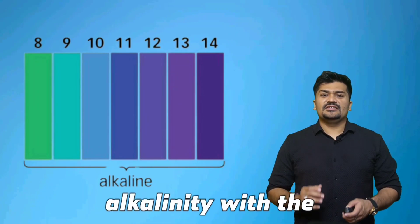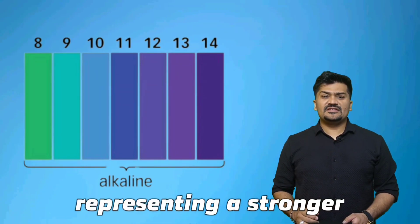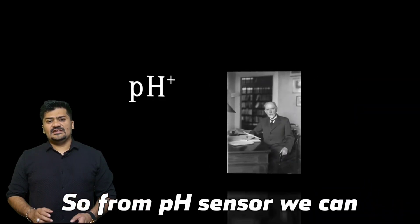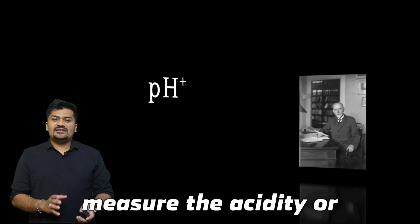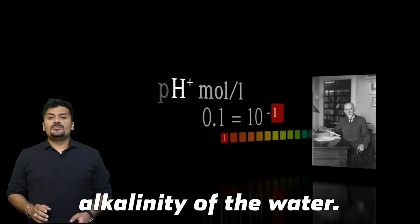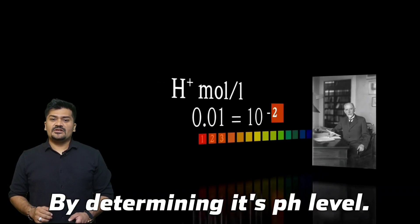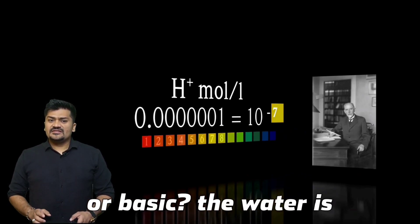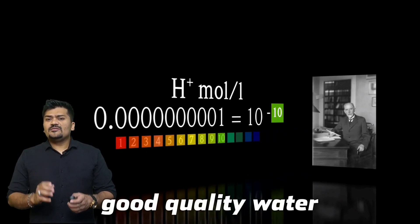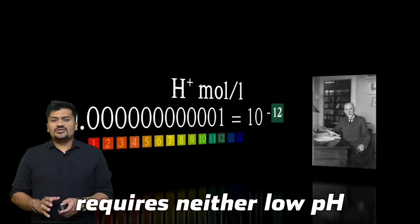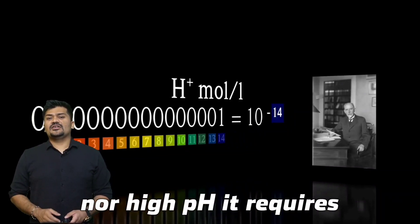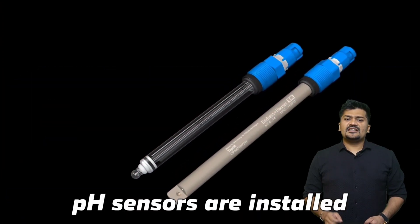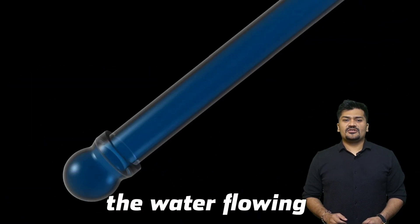From a pH sensor we can measure the acidity or alkalinity of the water by determining its pH level, indicating how acidic or basic the water is. Good quality water requires neither a low pH nor a high pH — it requires a controlled level of pH for best performance.